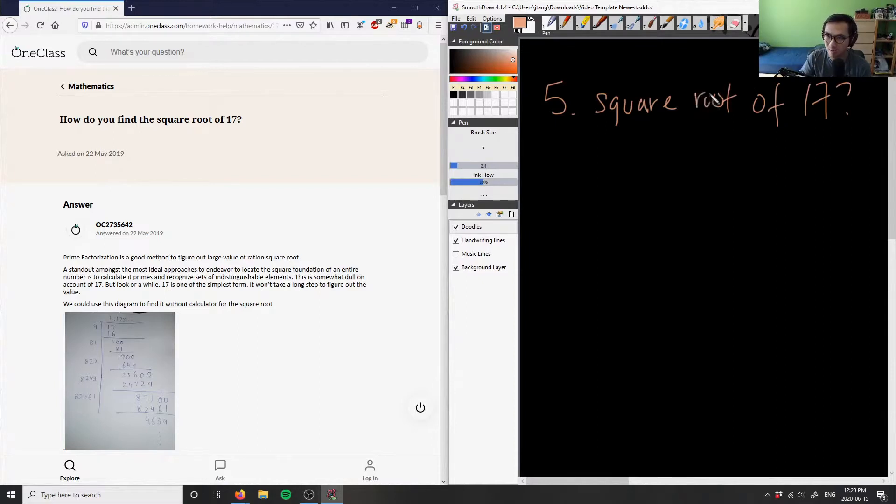And in this case, we know it is not a perfect square because 17 is a prime number. So if I take the square root of 17, we notice that this is not a perfect square because 17 is a prime number.